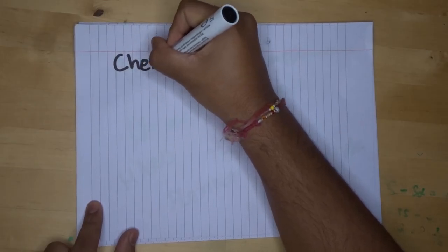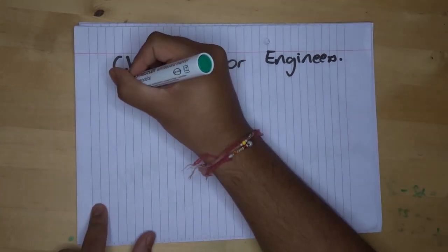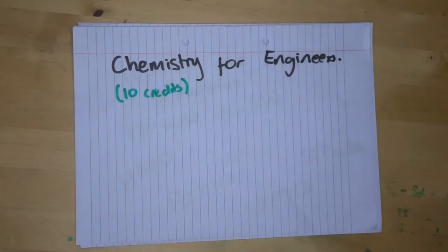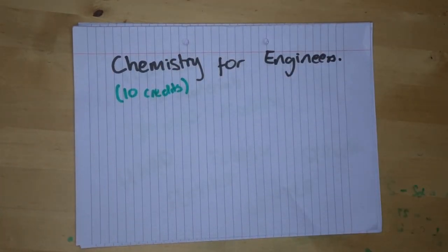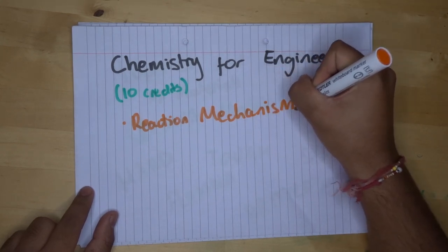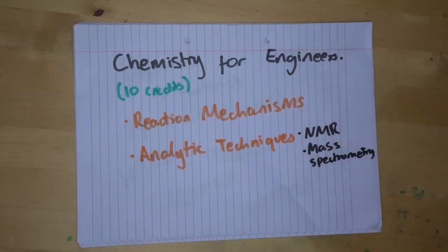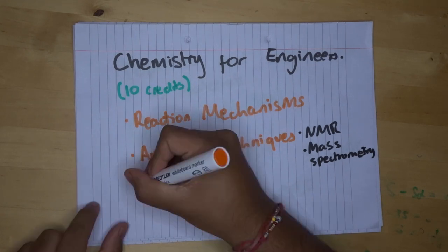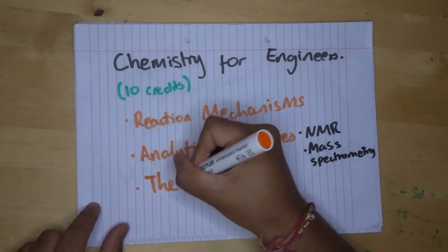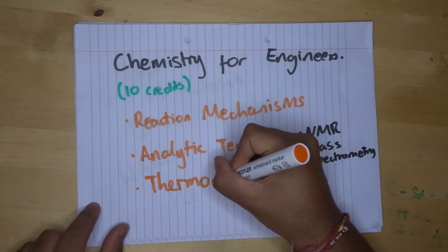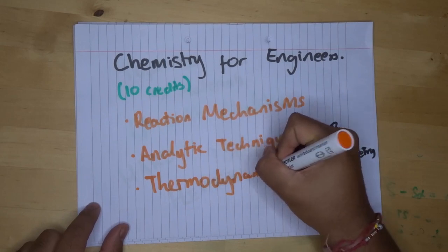The next module we are going to talk about is chemistry for engineers. Now, this is another 10 credit module and this covers topics such as reaction mechanisms, analytic techniques such as NMR and mass spectrometry, and it also covers thermodynamics. But this thermodynamics is a more practical version of thermodynamics.